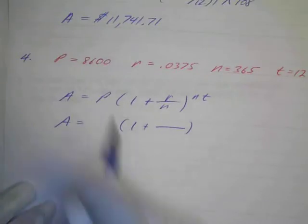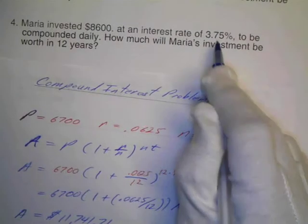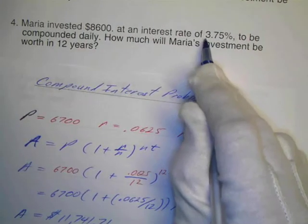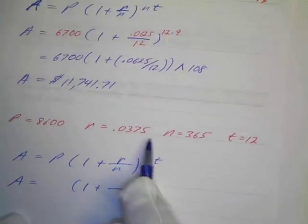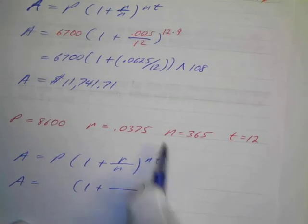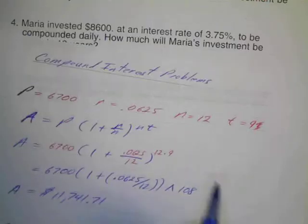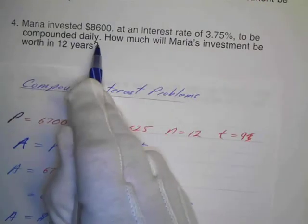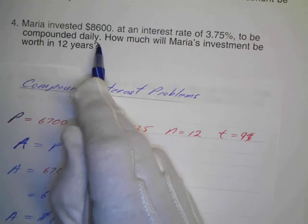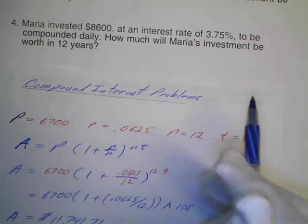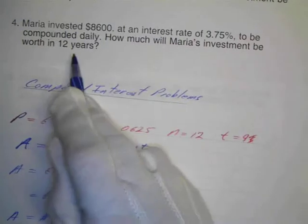My principal was $8,600. My interest rate, 3.75%. So I moved my decimal way to two places to the left. So it'll be 0.0375. So there's my rate. And my n will be 365 because there's 365 days in a year.